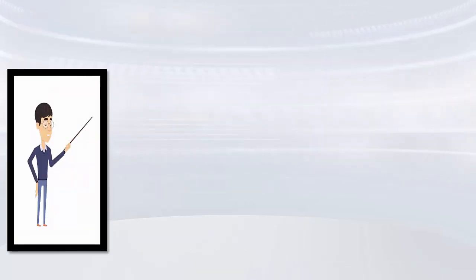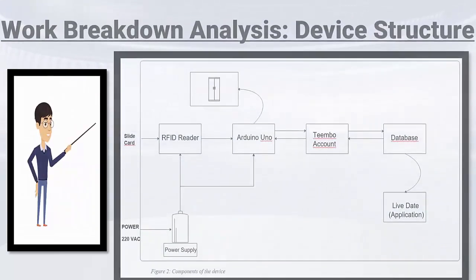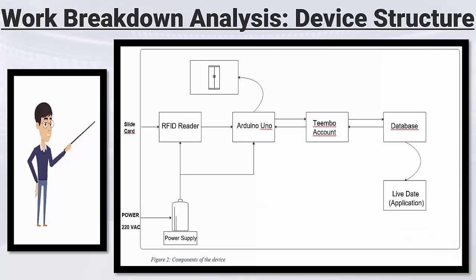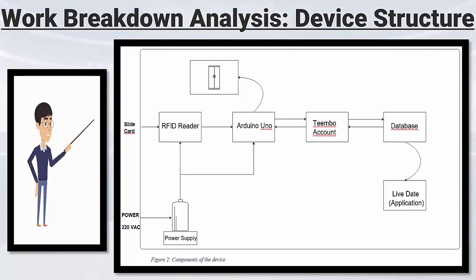We will start with a small description of our device structure. We have a specific component that takes the ID tag reference as an input, processes it via a microcontroller, and sends the ID to a database. The fact that the individual has a valid ID and a free spot inside the closed area allows the gate to open for them. Furthermore, data of the user's ID would be sent and saved in the database, and an update screen will show how many individuals are inside that closed area.